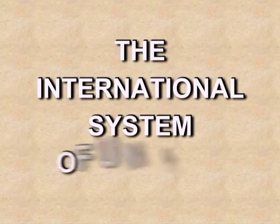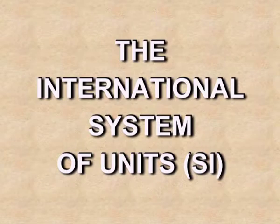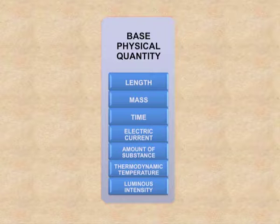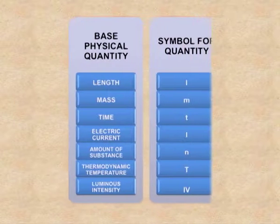Now let's see the International System of Units, also known as the SI system of units. There are seven basic physical quantities, also known as fundamental quantities. These are: length, mass, time, electric current, amount of substance, thermodynamic temperature, and luminous intensity.